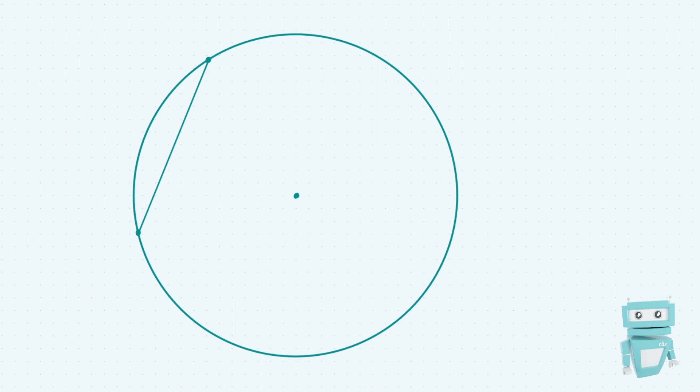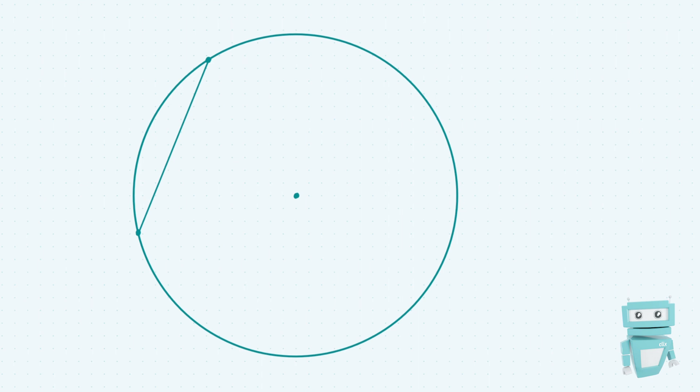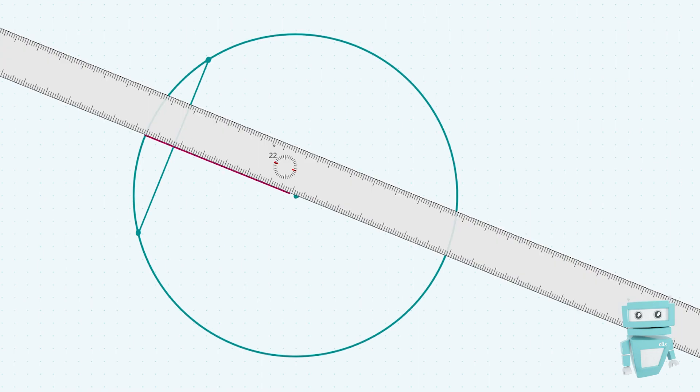And what this theorem states is that if we have a line that's perpendicular to a chord which passes through the center, such as this line here, and we're also told that this angle in here is 90 degrees, so the line which is passing through our center is perpendicular to the chord, then what we know is that this line actually bisects the chord.